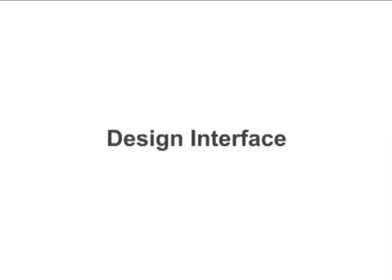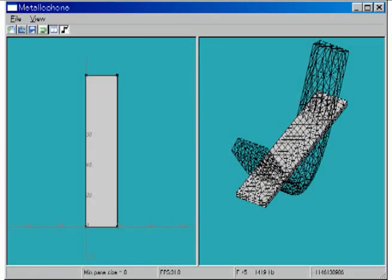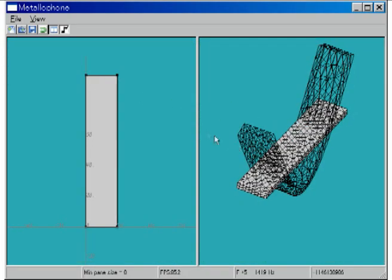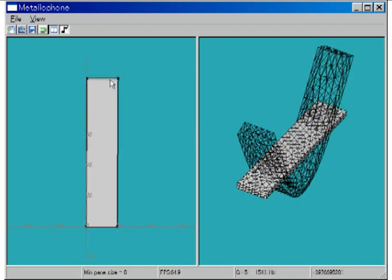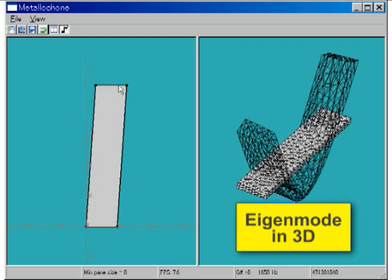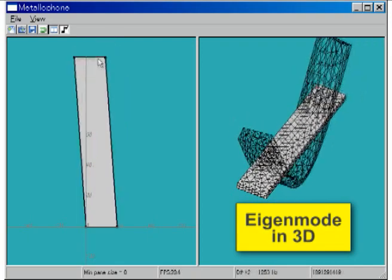Here we show the actual implementation of our interface. The system has two window panes showing the 2D design and the 3D eigen mode. As the user edits the metallophone's shape in the left window, the system immediately computes its eigen mode shown in the right window, which tells how the metallophone oscillates in 3D space.